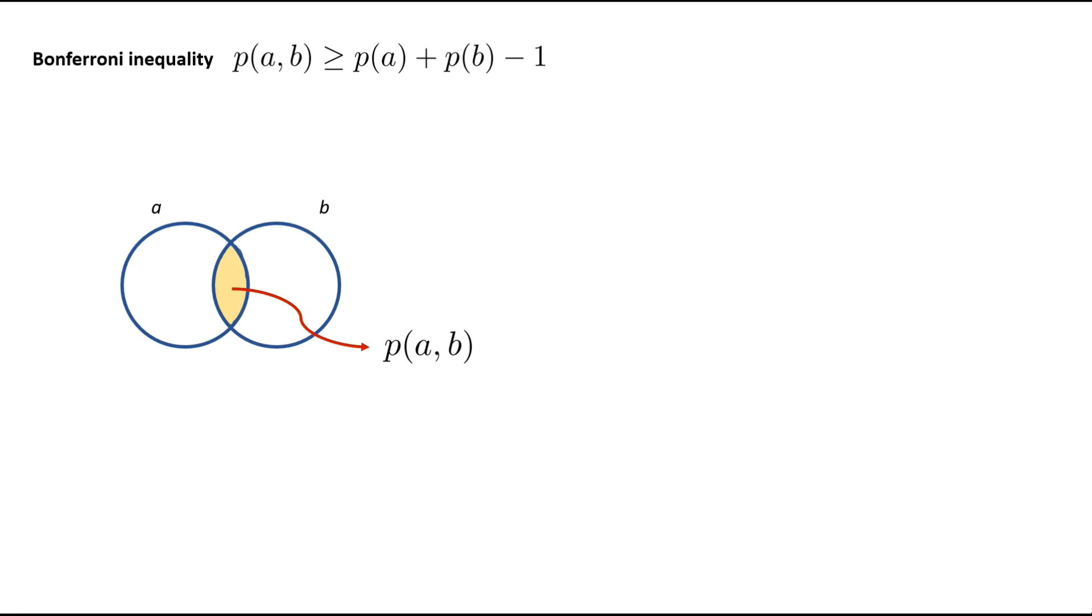So how does this diagram actually help us? We can actually write a nice equation from the diagram. We can see the probability of A plus the probability of B, the sum of the two circles, subtract one lot of the shared area, i.e. the probability of A and B, gives us the probability of being A or B. So one of the two.